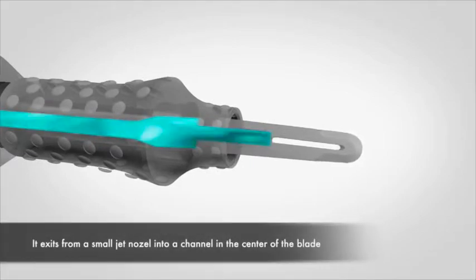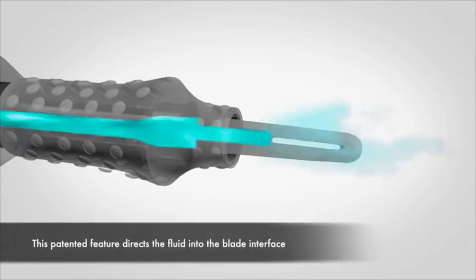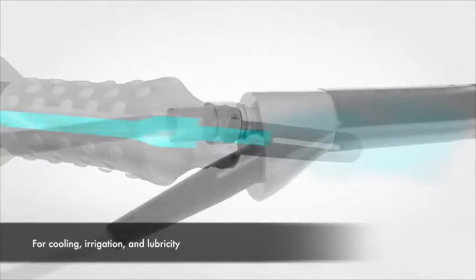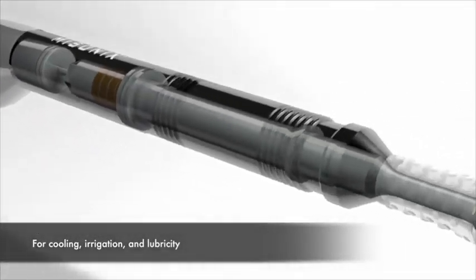It exits from a small jet nozzle into a channel in the center of the blade. This patented feature directs the fluid into the bone-blade interface for cooling, irrigation, and lubricity.